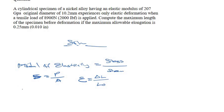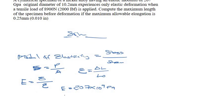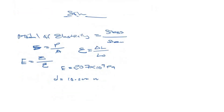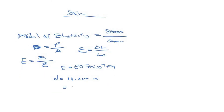From the question, our modulus of elasticity E is equal to 207 GPa, which is 207 times 10 to the power of 9 Pa. The diameter given is 10.2 millimeters, which can be expressed as 10.2 times 10 to the power of minus 3 meters.